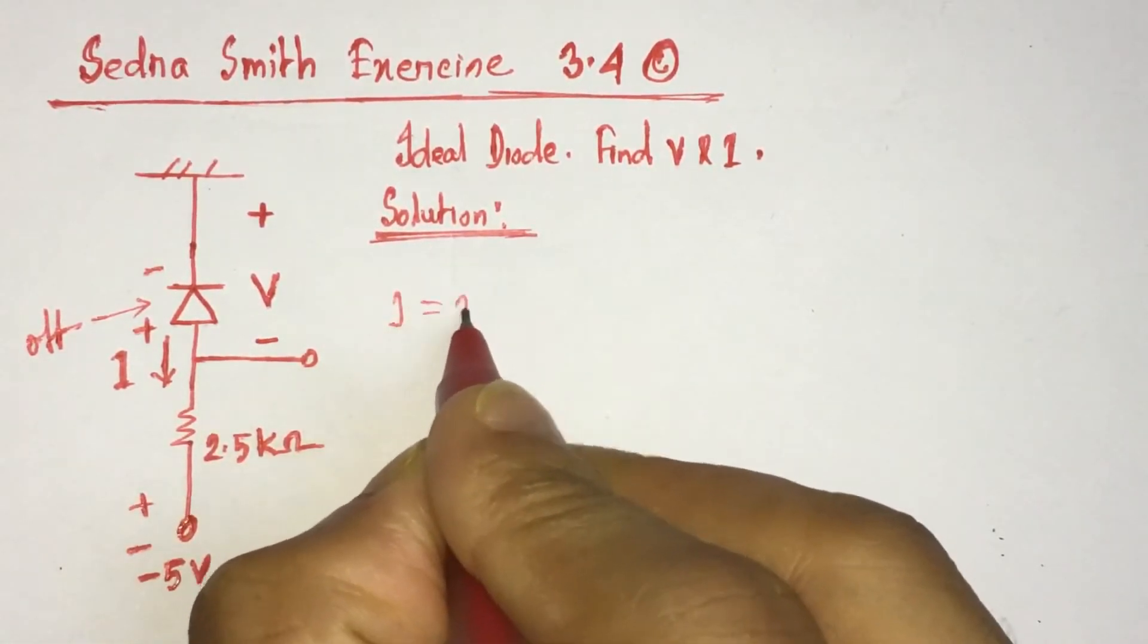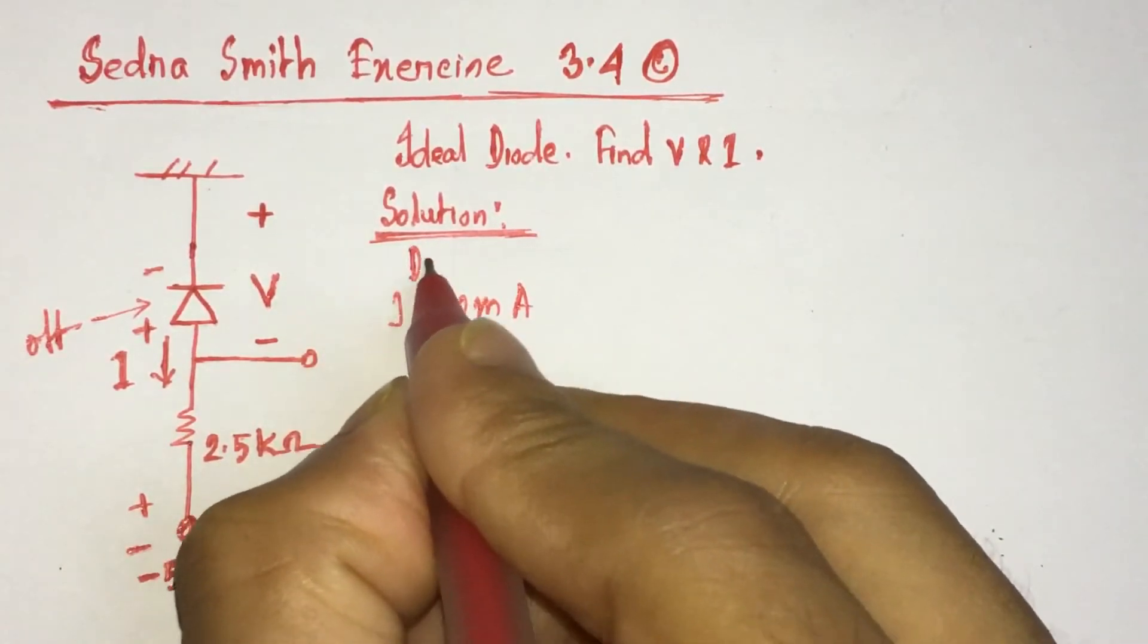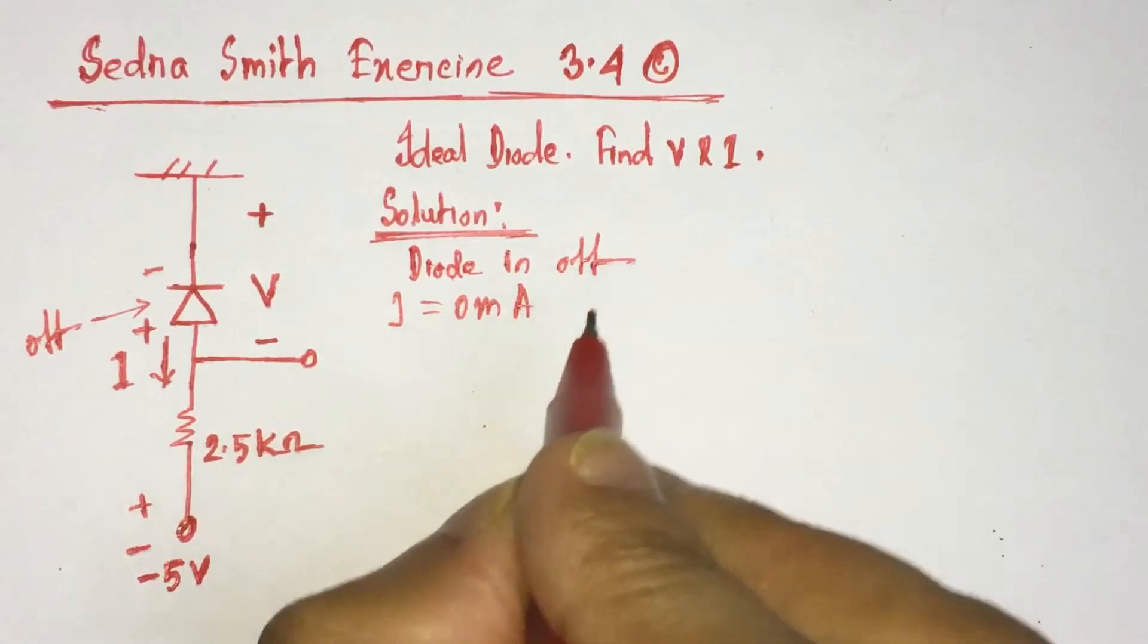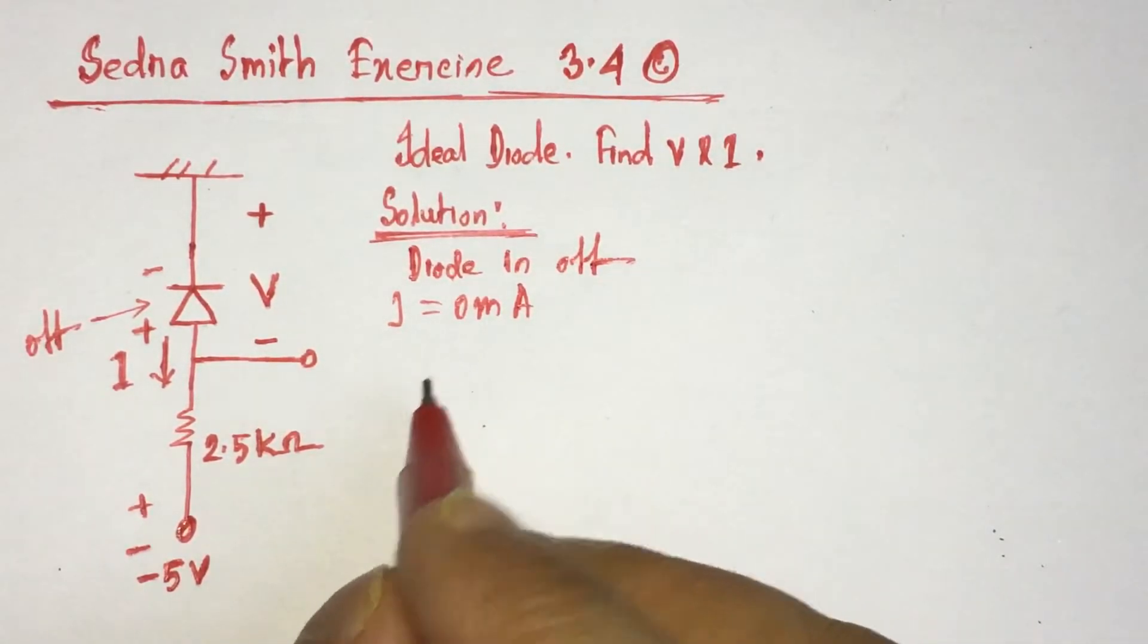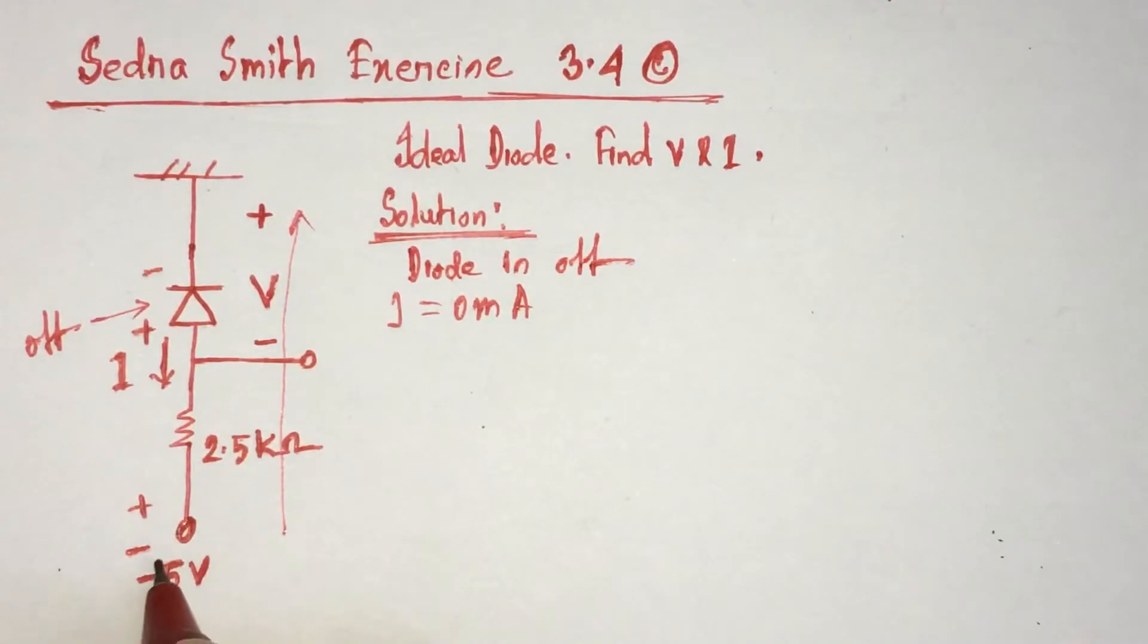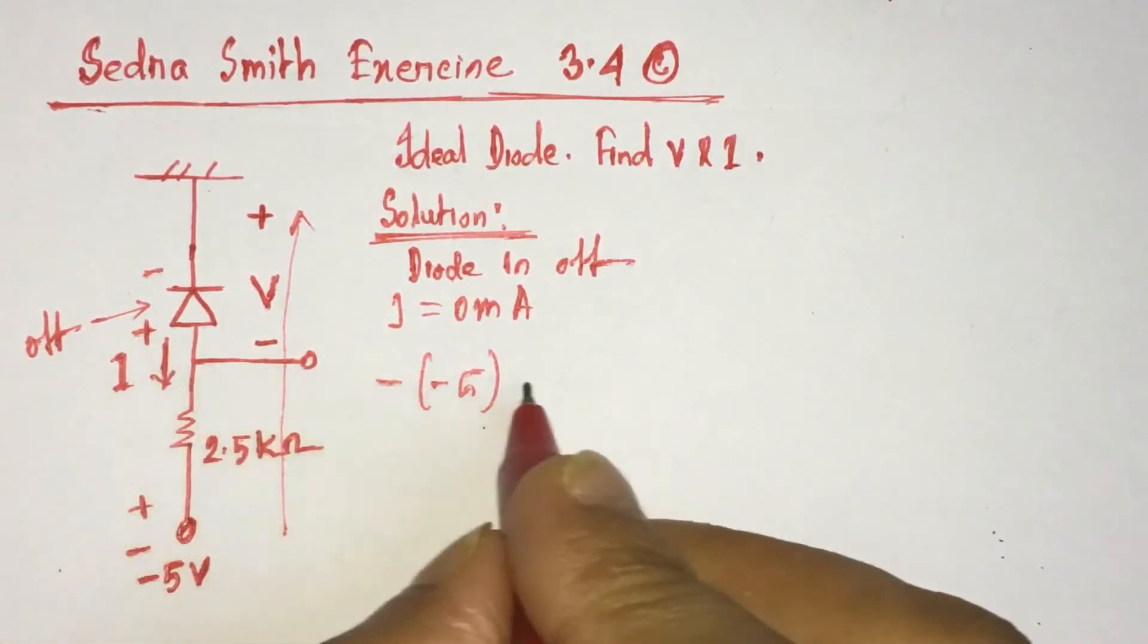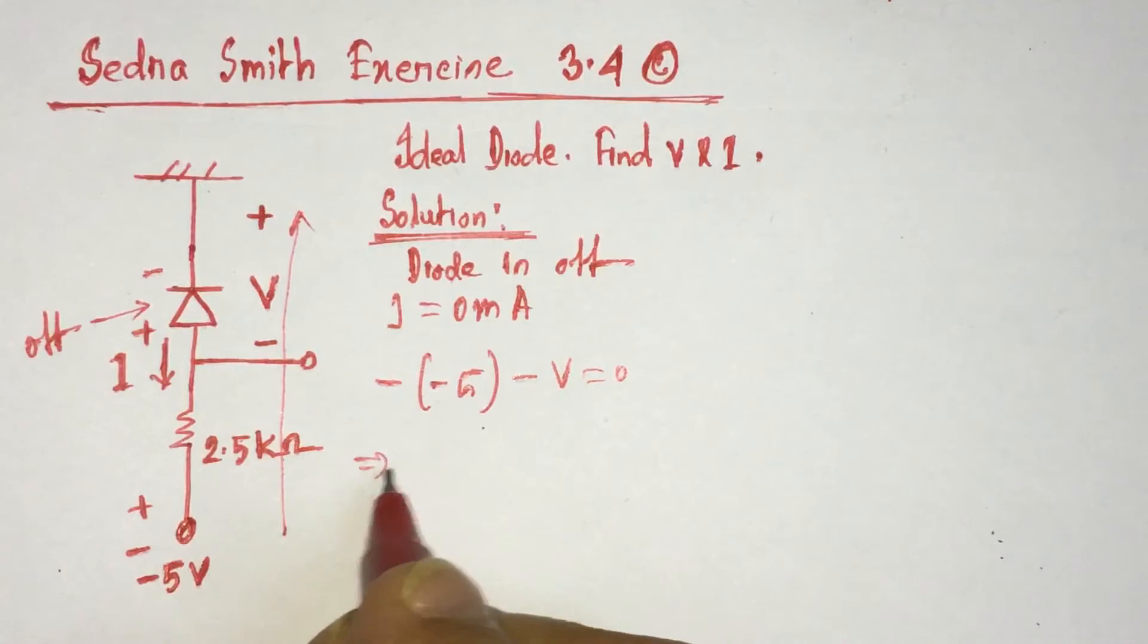Since the diode is off, current I will be zero. I equals zero milliamperes. Now to find the voltage V, we can run the KVL through the path. We have minus five volts minus V equals zero, that is V equals five volts.